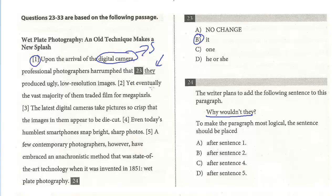How about after sentence two? 'Yet eventually the vast majority of them traded film for megapixels.' This looks much better, because 'the vast majority of them' — the photographers — even though originally they were reluctant to embrace digital cameras, eventually traded their film for megapixels. The sentence then lists all these advances and how sharp and crisp the photos are. So 'why wouldn't they?' should be placed after sentence two, referencing 'they' to 'the vast majority of them.' The answer is B for question 24.